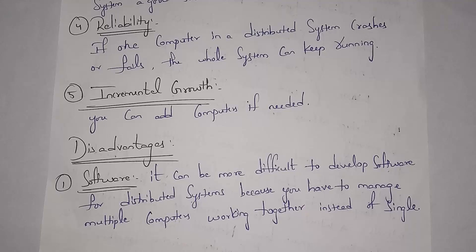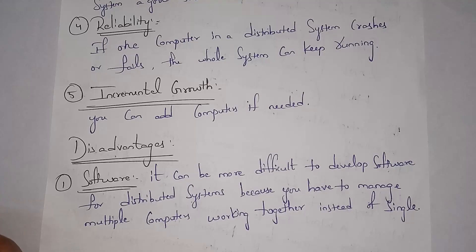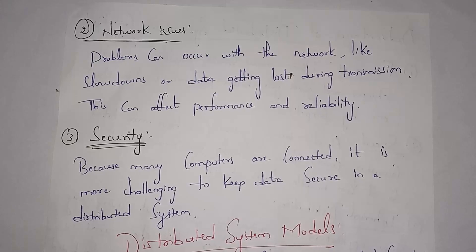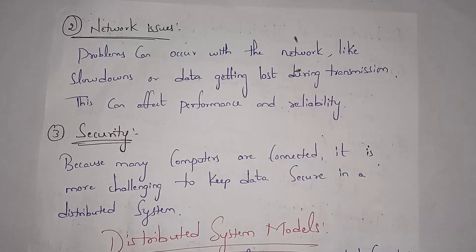Fifth advantage is incremental growth — if there is a big task you can add computers to handle it. Disadvantages of distributed systems over centralized systems: first, software — developing software to connect many computers in different locations is very tough. Second, network issues — connecting various systems in different locations via cable or internet creates a high chance of network problems. Third, security — as many computers are connected to each other, keeping data secure is very tough.